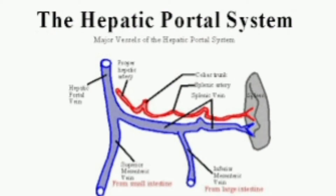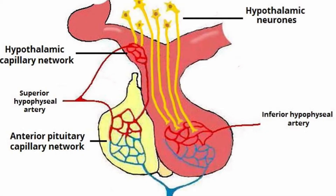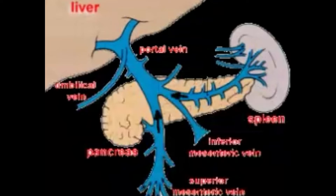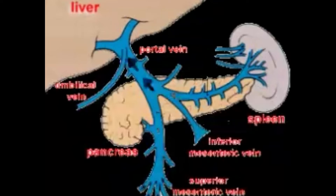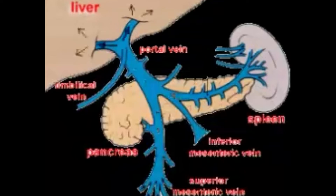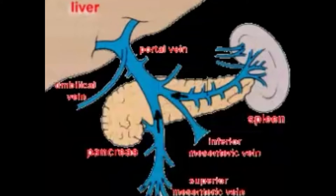Apart from these, our body has two other circulatory pathways: the hepatic portal system and the hypophyseal portal system. The hepatic portal system is universally present in all vertebrates. It is a vascular system that exists between the digestive system and the liver. A vein called the hepatic portal vein carries blood from the intestine to the liver. The liver finally opens into the inferior vena cava through the hepatic vein before delivering it to the systemic circulation.